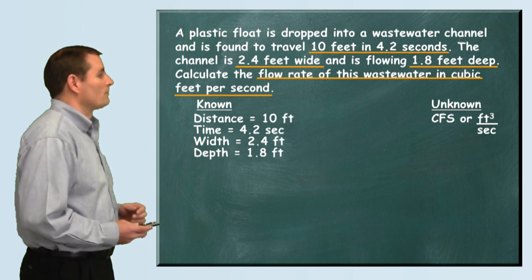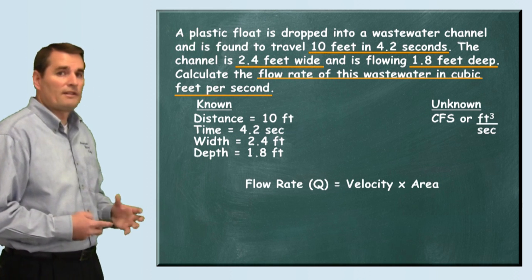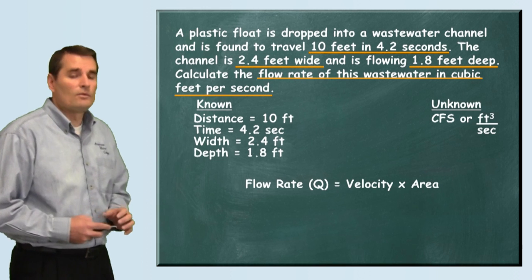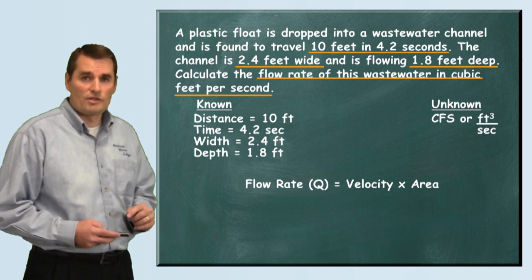Now we're going to select our formula. The formula we'll use is the flow rate or Q for the total quantity of flow. Flow rate equals the velocity times the area of the flow channel.